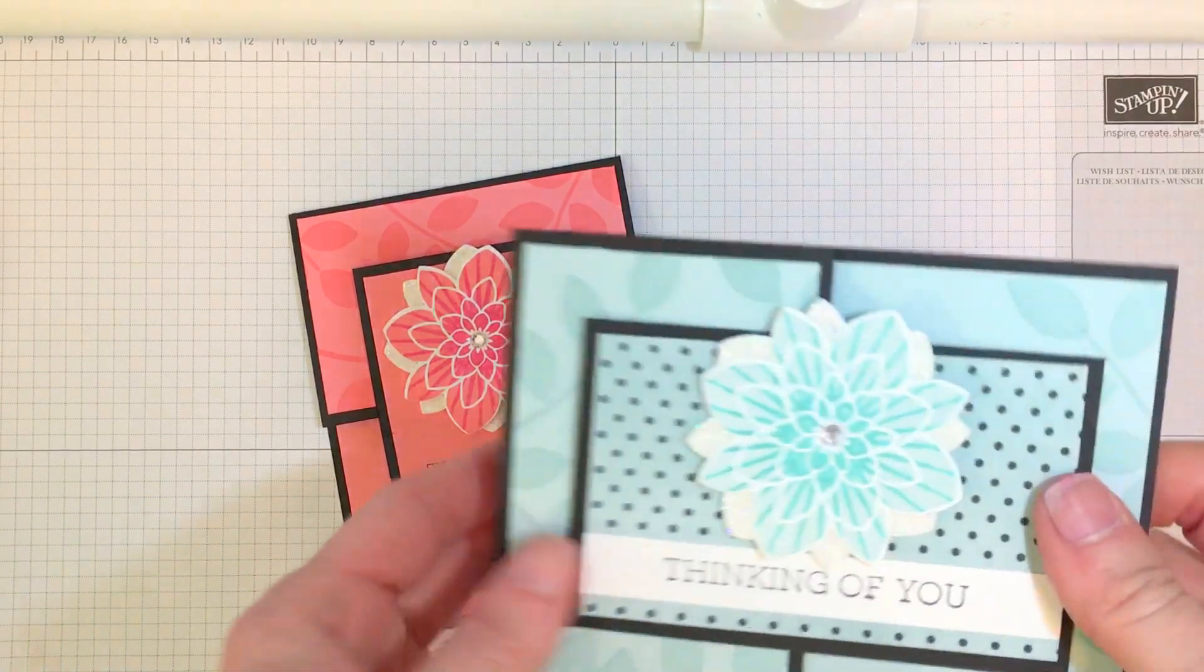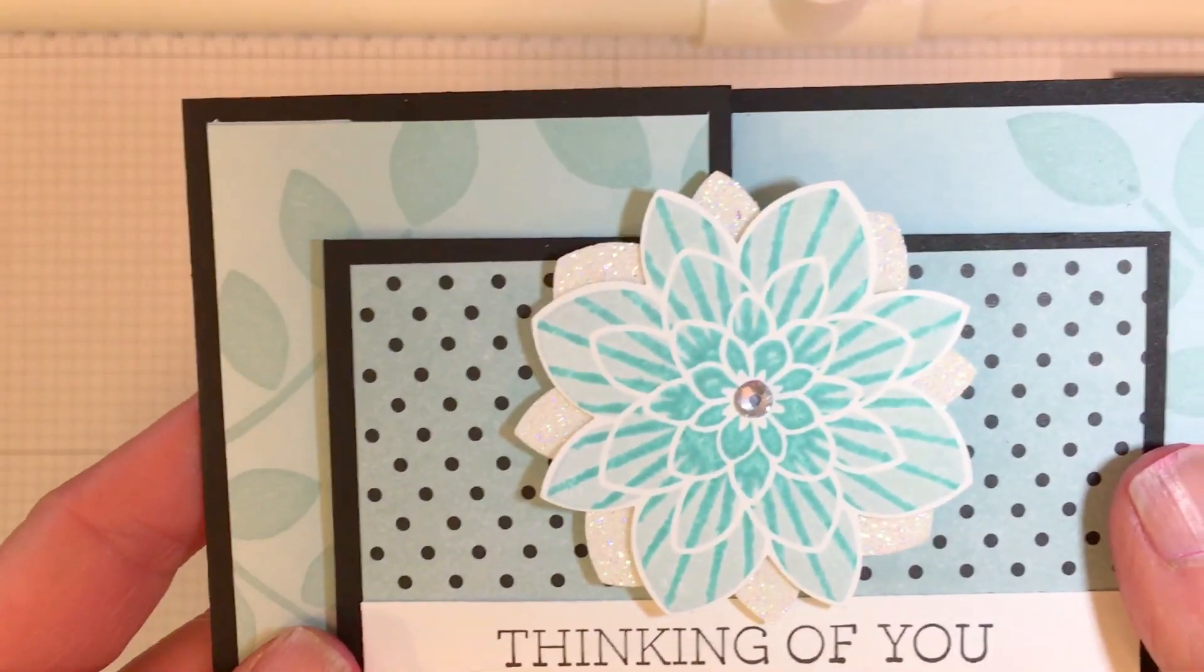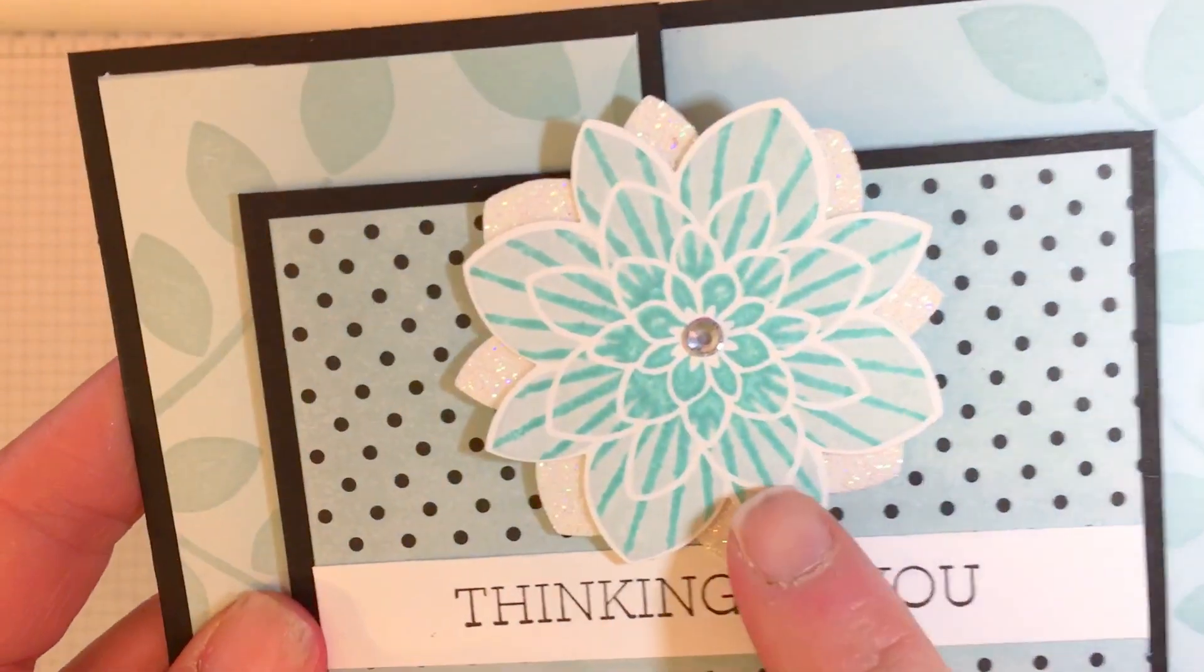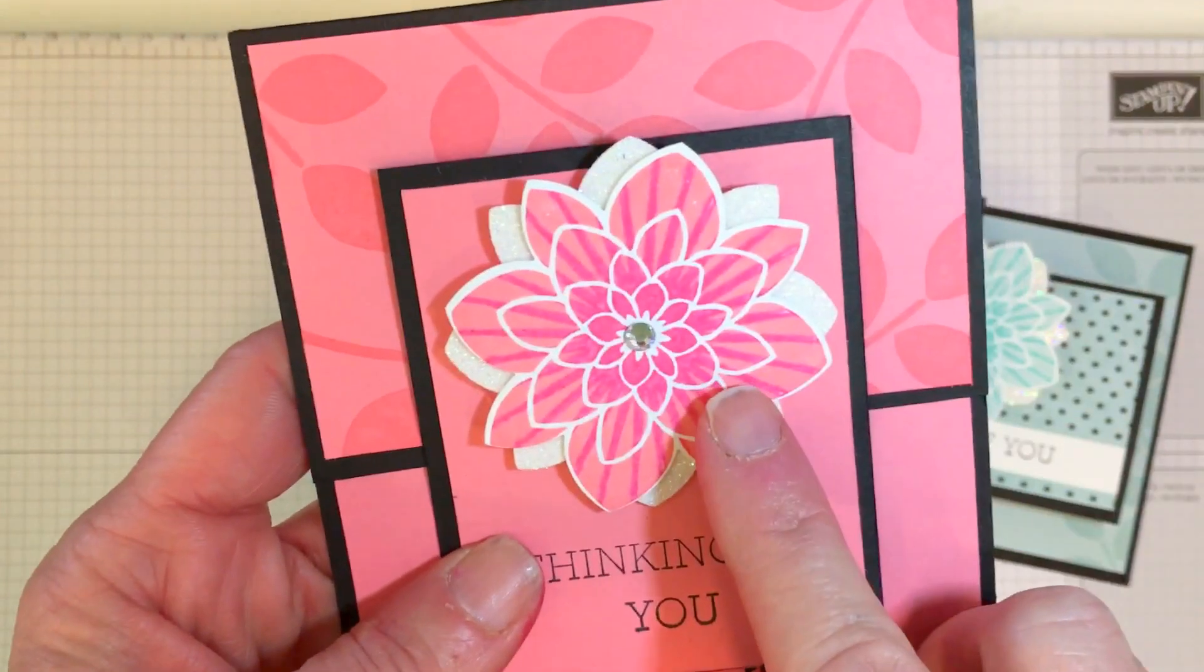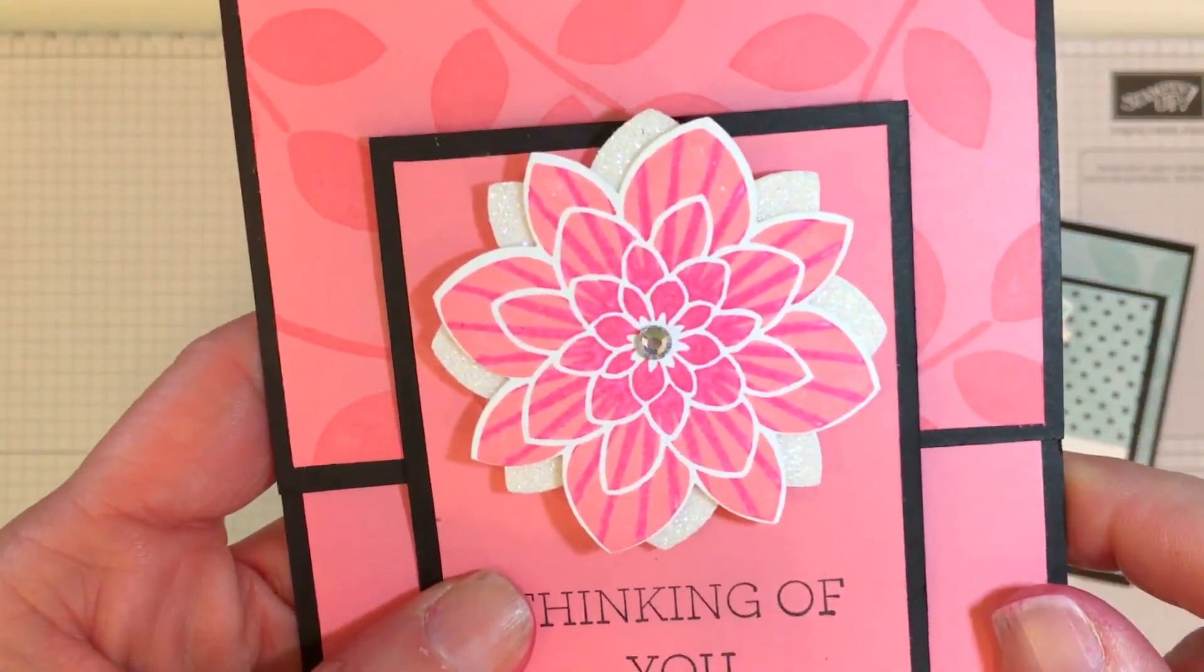What I'm going to highlight today is how I created the medallion flower. You can see right here this one is Soft Sky and Bermuda Bay, and on this one I used Flirty Flamingo and Melon Mambo.